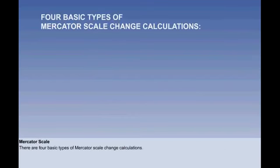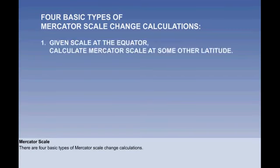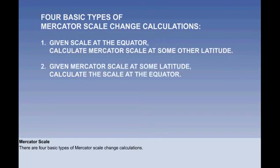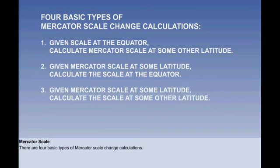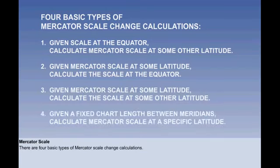The ATPL syllabus requires you to be able to carry out Mercator scale change calculations. These calculations divide into four main types of problem: given scale at the equator, calculate Mercator scale at some other latitude; given Mercator scale at some other latitude, calculate the scale at the equator; given Mercator scale at some latitude, calculate the scale at some other latitude; and given a fixed chart length between meridians, calculate Mercator scale at a specific latitude.